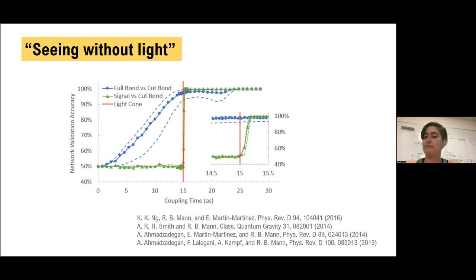This phenomenon we can call seeing without light. It's well understood. It has been examined in several papers before us, for example, some of them are the ones listed there. But the interesting part about our work in particular is that we actually saw without light. We simulated the experiment and we saw that using a neural network we could tell things about the boundary using only the local measurements.